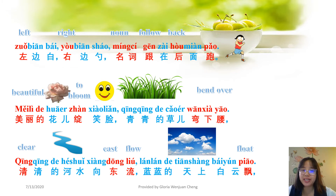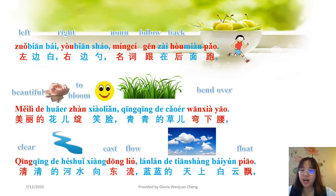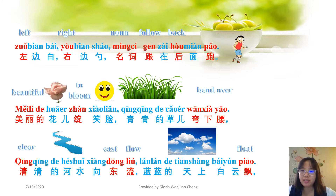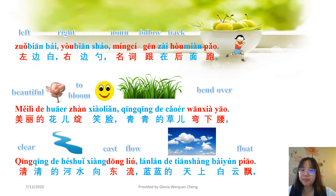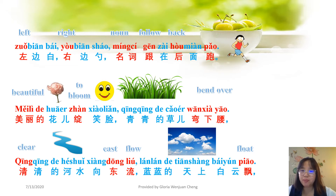轻轻的河水向东流, 蓝蓝的天上白云飘. Here 轻轻的 is an adjective meaning 'clear', 河水 is a noun meaning 'river', 向东流 means 'flow to the east' — 东 means 'east', 流 means 'to flow', 向 means 'towards'. 蓝蓝的 is an adjective meaning 'blue', 天 (sky) is a noun, 白云 means 'white clouds', 飘 means 'to float'.